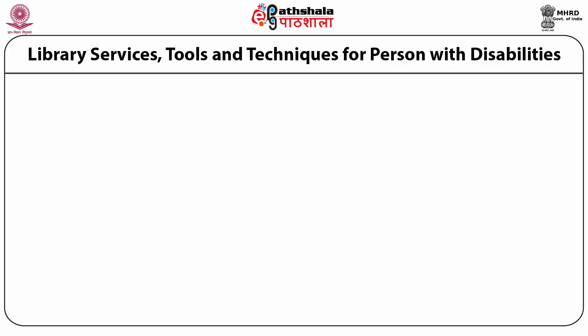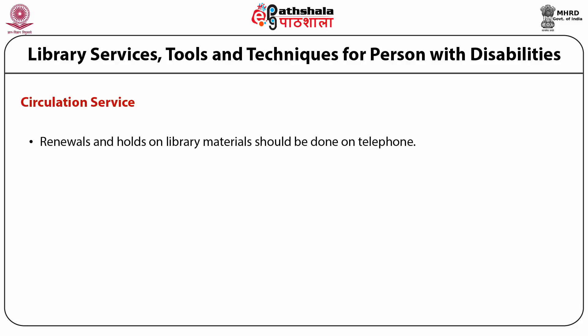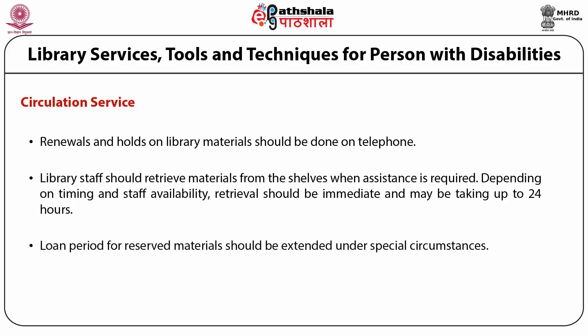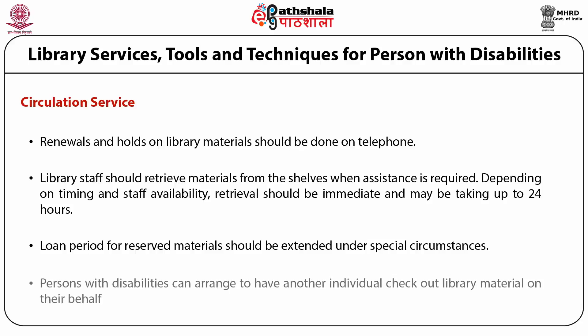Now let us see library services, tools and techniques for persons with disabilities. First is circulation service. Circulation service includes the following: renewals and holds on library materials should be done by telephone; library staff should retrieve materials from the shelves when assistance is required; depending on timing and staff availability, retrieval should be immediate or may take up to 24 hours; loan periods for reserve materials should be extended under special circumstances; and persons with disabilities can arrange to have another individual check out library material on their behalf.